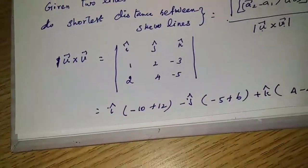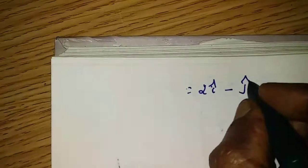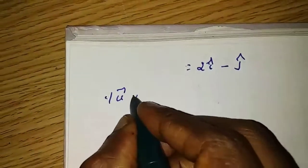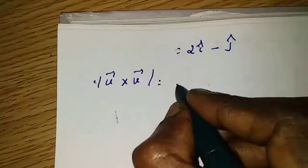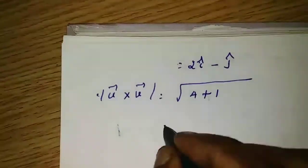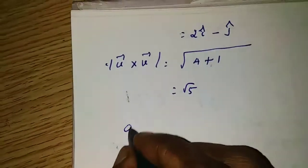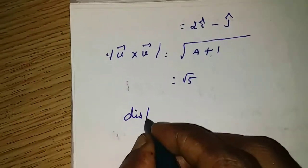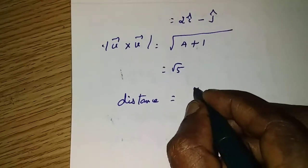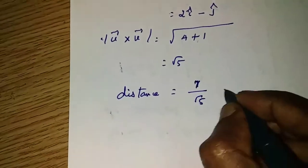The answer for u cross v is 2i-cap minus j-cap. The modulus of u cross v equals the square root of 2 squared plus 1 squared equals square root of 5. Therefore, the shortest distance equals 7 divided by root 5 units.